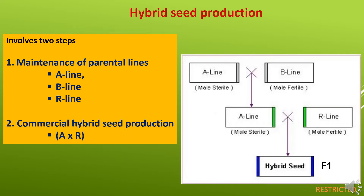A line is multiplied by crossing with B line. B line is multiplied by crossing of itself — selfing. R line is multiplied by selfing and self-pollination. The second step includes commercial hybrid seed production, where the male sterile A line and restorer R line are used. Now we will discuss in detail the characteristics and multiplication of each line.